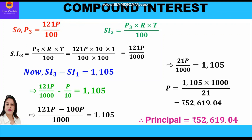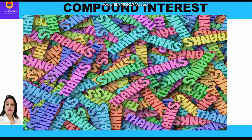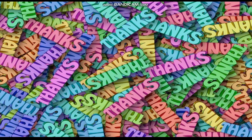The principal comes out to rupees 52,619.04. So the sum invested in this question is rupees 52,619.04. Hope you have understood the question where the difference between the interest of the first year and third year was given. Please do like and subscribe to my channel. Thank you everyone, have a wonderful day ahead.